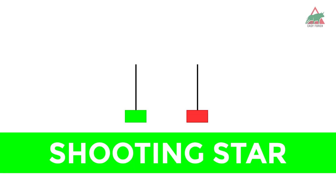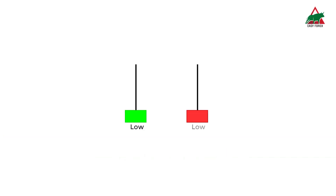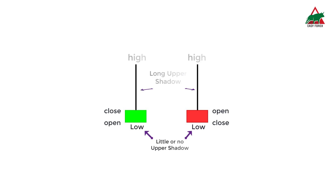Shooting star is a bearish candlestick pattern with a small lower body, little or no lower wick, and a long upper wick that is at least two times the size of the body.